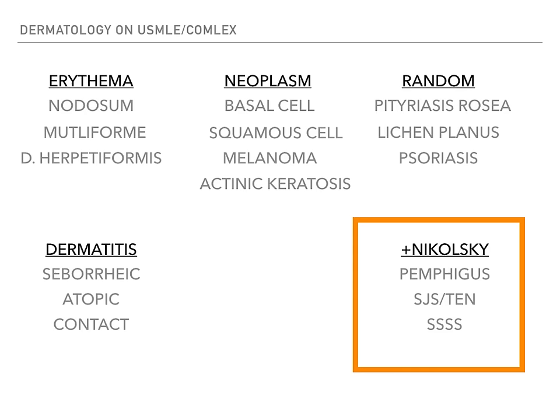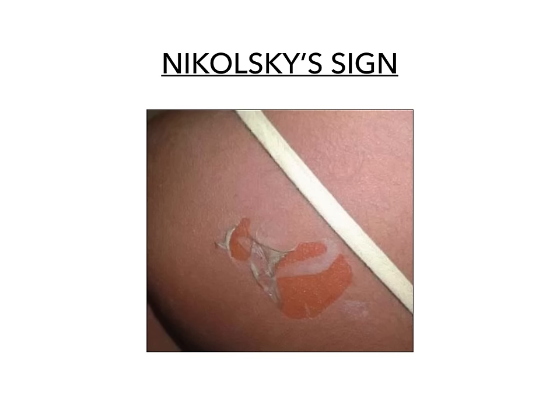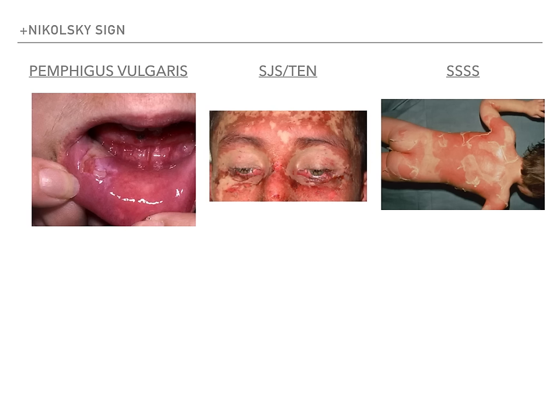The last category is the positive Nikolsky sign category. The Nikolsky sign is when you rub the skin and the skin literally rubs off and sloughs right off — pretty gross. All three diseases in this category — pemphigus vulgaris, Stevens-Johnson syndrome slash toxic epidermal necrolysis, and staphylococcal scalded skin syndrome — are going to have a positive Nikolsky sign and look really nasty.